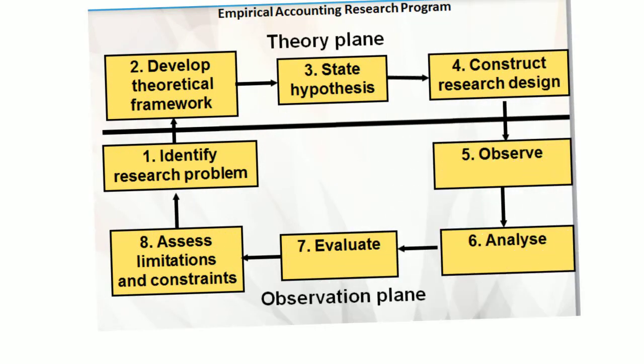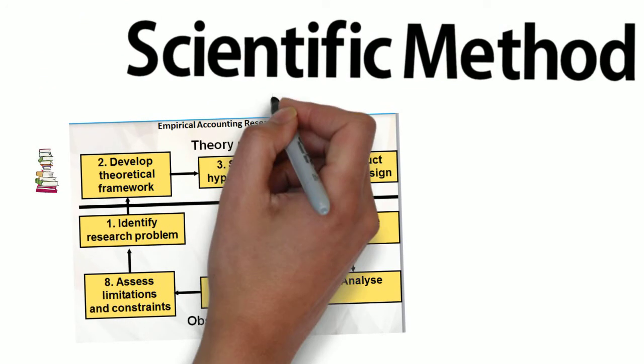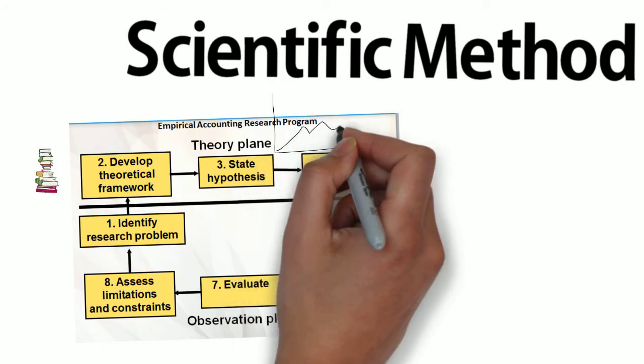This is called the scientific method. You need to understand the steps in this scientific method. Also, you should note the role of theory and observation. That's the connection between what we already know, or think we know at least, that leads us then to make predictions.